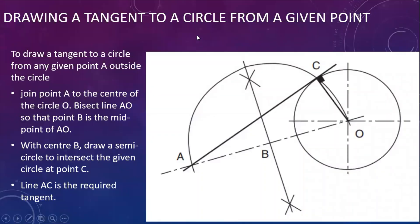Our next problem in tangency is to draw a tangent to a circle from a given point. This is the second example of tangency. Here is our circle and the given point A, which is outside of the circle. The initial example had the given point on the circle, but this time the point is outside, at some distance away from the circle.